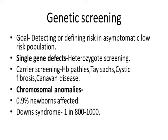The main goal of genetic screening is to detect or define the risk in a normal population regarding chromosomal abnormalities or genetic conditions — it defines risk in the asymptomatic low-risk population. Screening targets single gene defects or chromosomal anomalies, both structural and numerical like trisomies 21, 18, or 13. It is mainly indicated for conditions like hemoglobinopathies, cystic fibrosis, and Canavan disease, screening for heterozygous carriers.